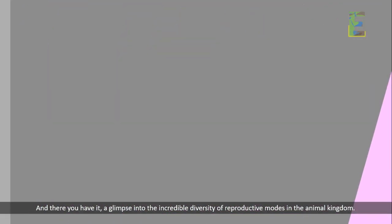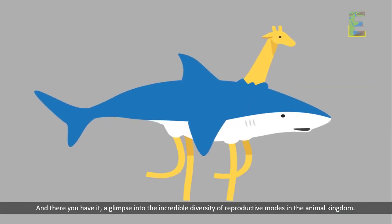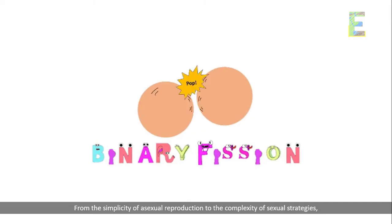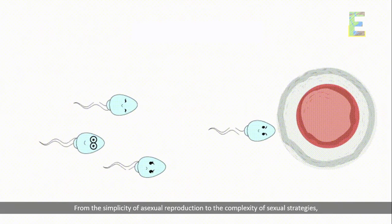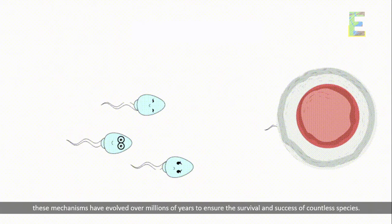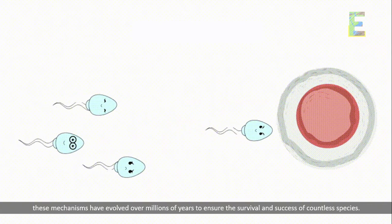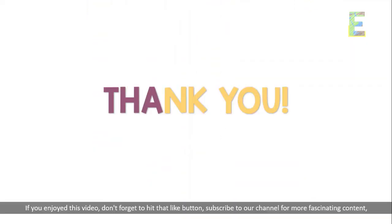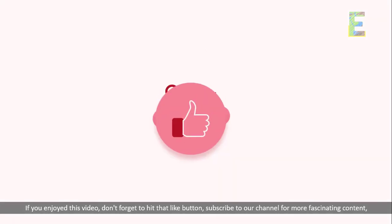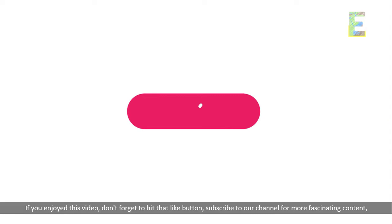And there you have it — a glimpse into the incredible diversity of reproductive modes in the animal kingdom. From the simplicity of asexual reproduction to the complexity of sexual strategies, these mechanisms have evolved over millions of years to ensure the survival and success of countless species. Thank you for joining us on this educational journey. If you enjoyed this video, don't forget to hit that like button and subscribe to our channel for more fascinating content, and leave your thoughts or questions in the comments below.